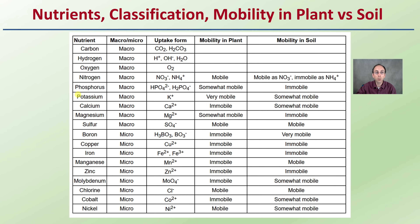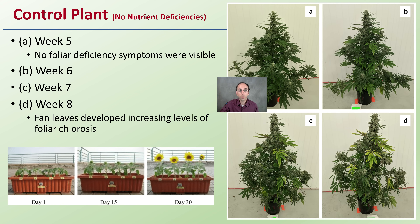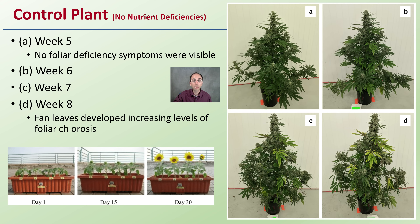This table shows nutrient classifications — whether macro or micro — the uptake form, chemical form, ions, mobility in the plant, and mobility in the soil. A lot of people forget about soil mobility, but it can also play a factor in your odds of seeing a deficiency or in ways of correcting it.